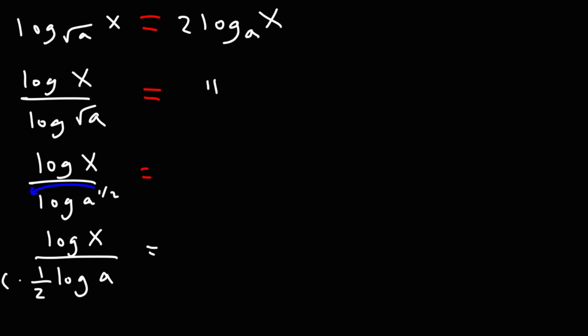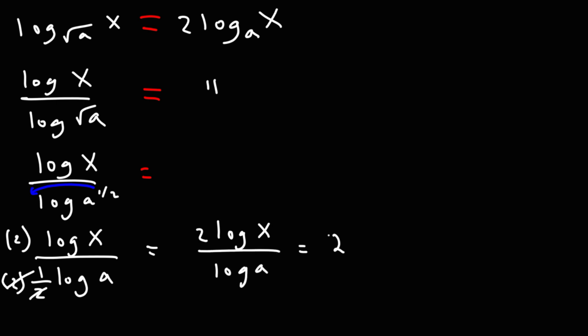Now to get rid of the 1/2 in the denominator, we're going to multiply the top and the bottom by 2. Since 2 over 2 is 1, and multiplying by 1 doesn't change the value of the expression, we are not changing the value of the fraction. Now 2 times 1/2 is 1, so we get 2 log x over log a, which I'll write as 2 times log x over log a.